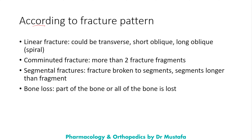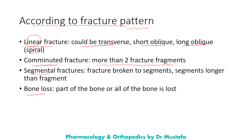Now let's talk about types of fractures according to fracture pattern. We have many different patterns: linear fractures, comminuted, segmental, and bone loss. In linear fractures, as the name implies, there is only one line in the bone representing the fracture — this can be transverse, short oblique, or long oblique, also known as spiral. A comminuted fracture has more than two fracture fragments, with more than one fracture line.